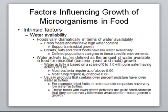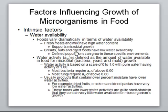Extrinsic factors are environmental factors. Foods that have a lot of water will support the growth of microorganisms; foods that have less water will not. For example, meat has a lot of water so it will go bad very quickly. On the other hand, dry beans, nuts, or red kidney beans can be saved for months or even years. Rice purchased from the supermarket can be kept for months before using, because it has less water — and less water means less support for microbial growth.